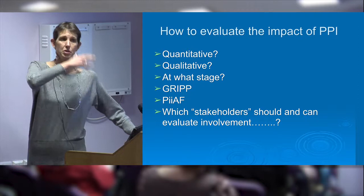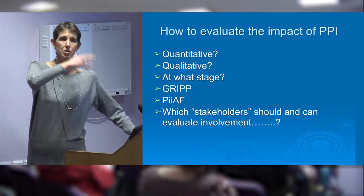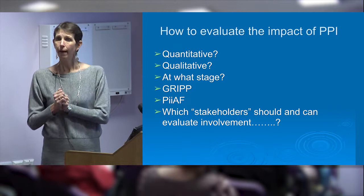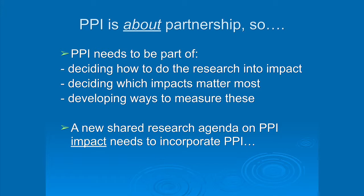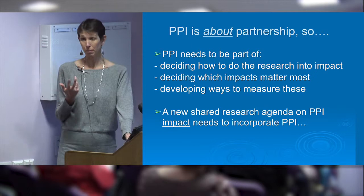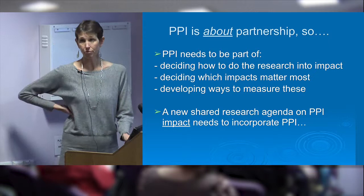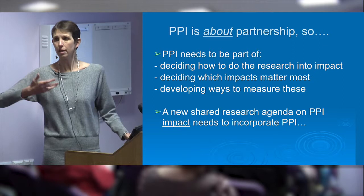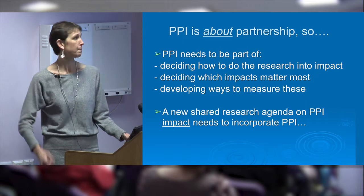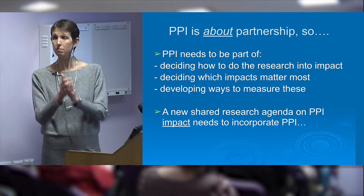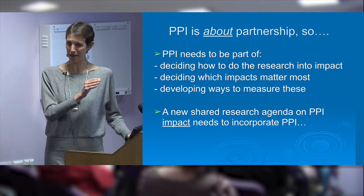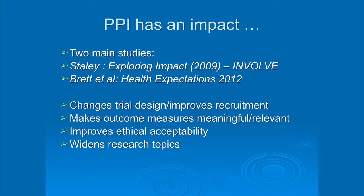It is a little more complicated than that, because PPI is about partnership. It's not just about people like me deciding how to evaluate it - PPI itself needs to be part of deciding how we do the research into impact. We actually need to know from patients what are the impacts of involving them in research that matter most to them - what would make them want to get involved again? Is it about clear information leaflets or other things? And we need to develop how to measure those impacts. This is a pretty new research agenda and we need to incorporate PPI in developing it.